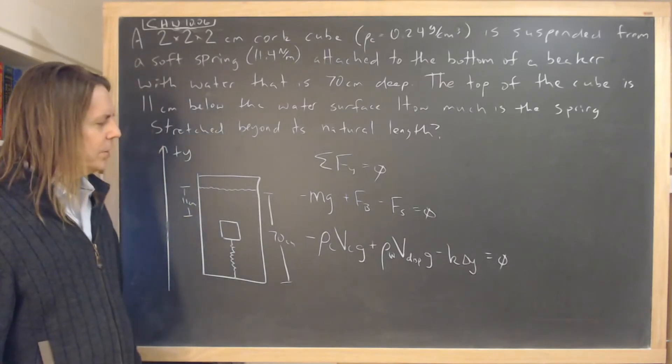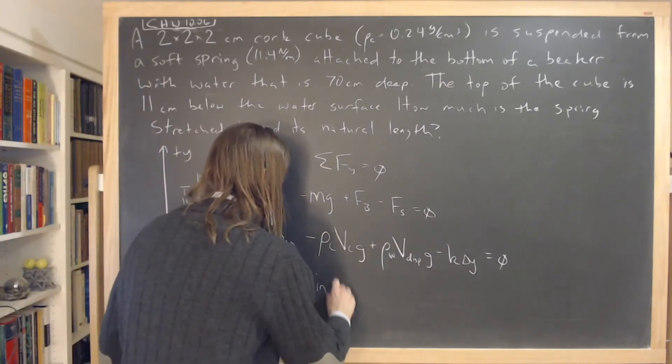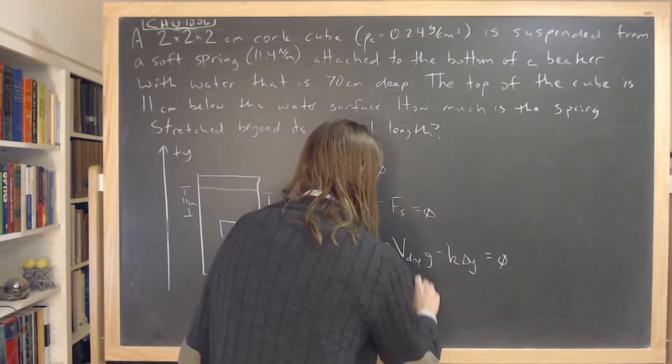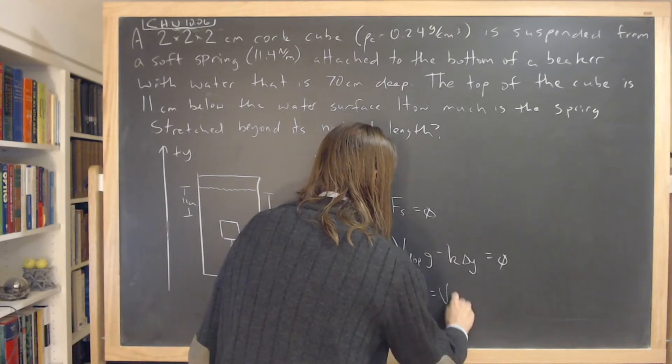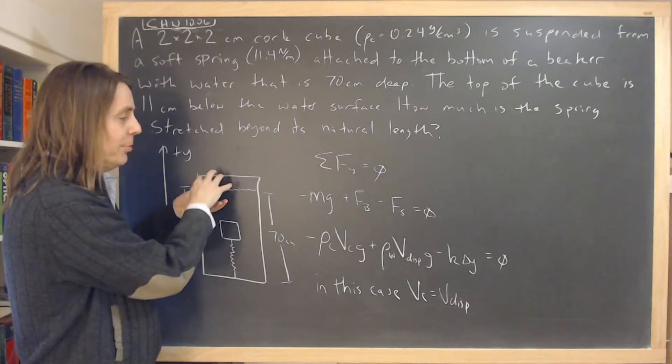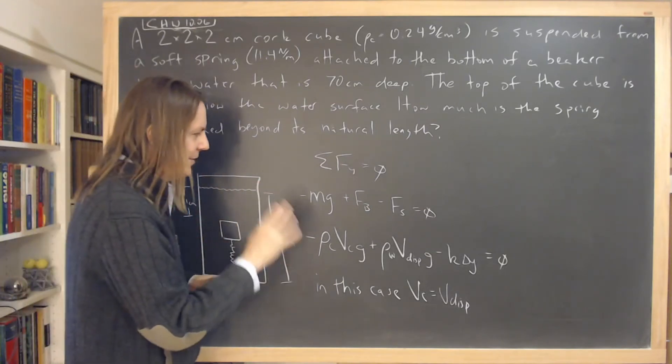All right. So let's see which of these things we know. So in this case, let's make it very clear. In this case, the volume of the cork equals the volume displaced. That's true because it's completely submerged. For floating problems, which you'll definitely see, that's not going to be true. But since it's true this time, I want to do that because then you can see we can,